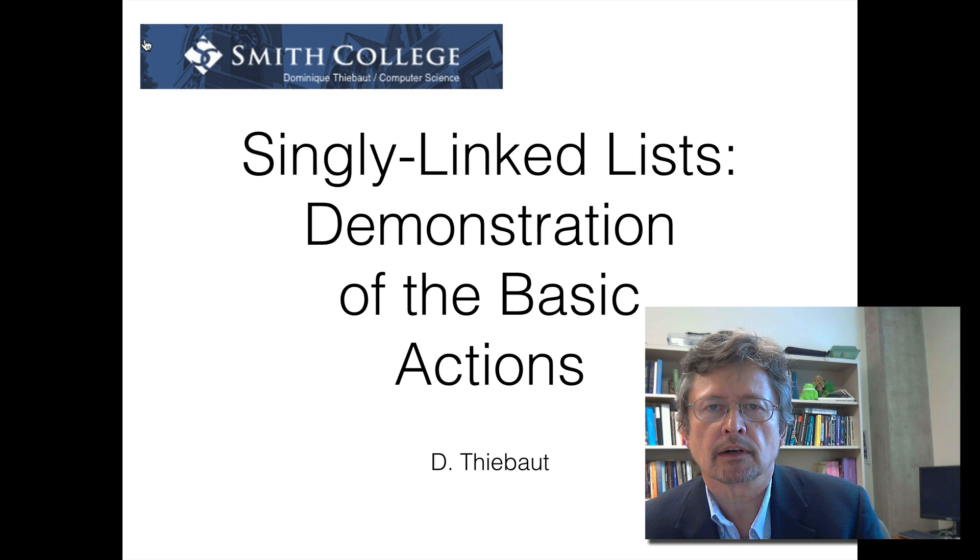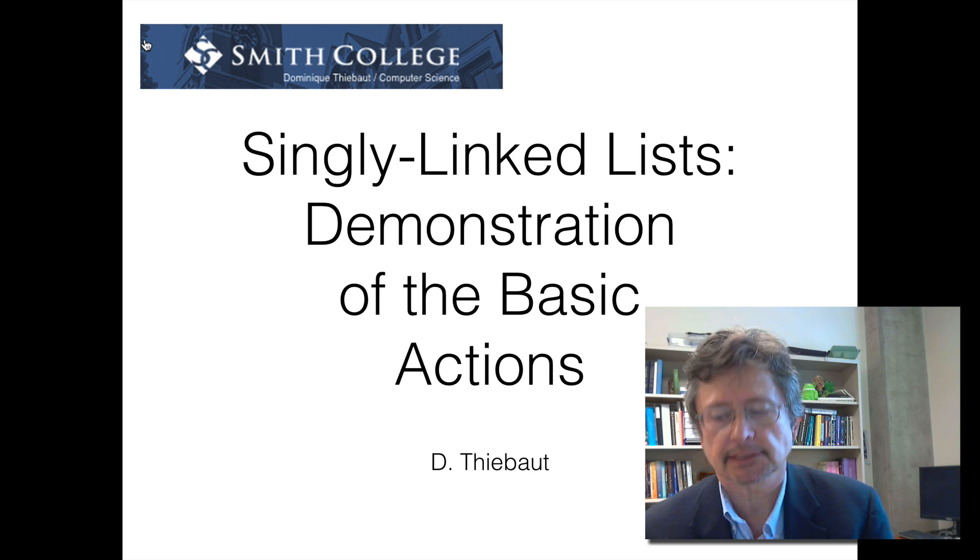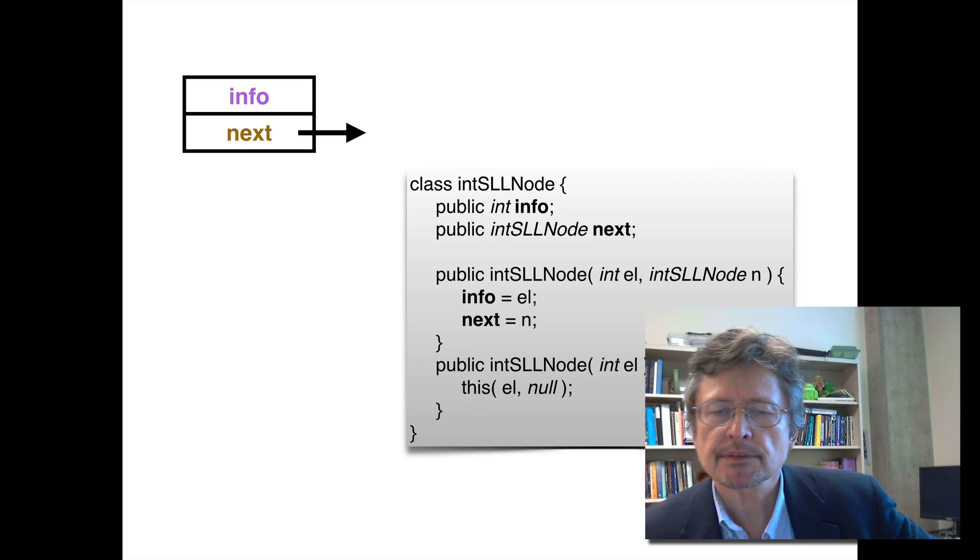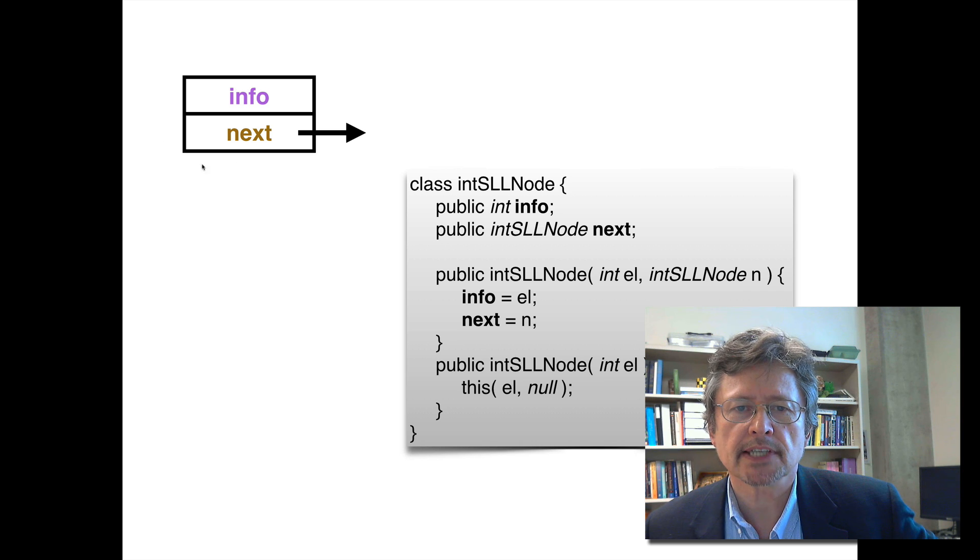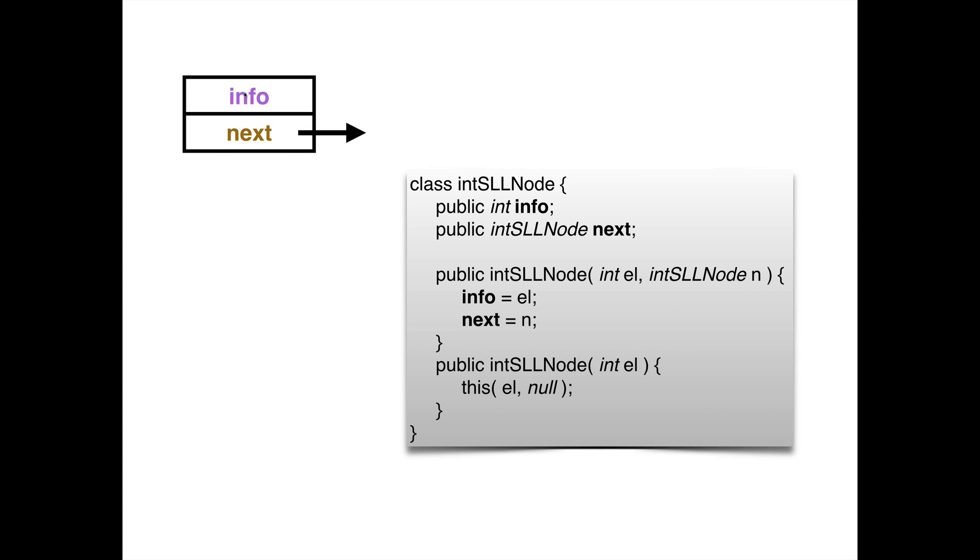This is a quick demo of the basic operation of singly linked lists. So here's what we have. This is the typical cell of a linked list. It has two fields, an info field that will contain the information we want to keep, and in this case it's going to be an integer. And then next is a reference to the next element in the list.